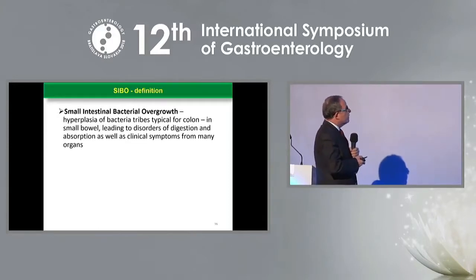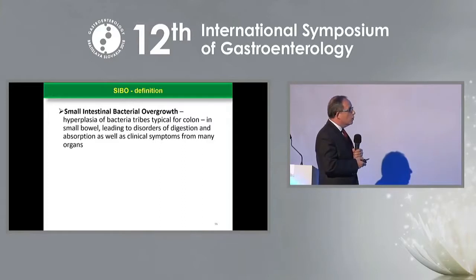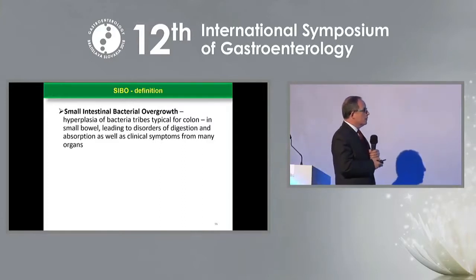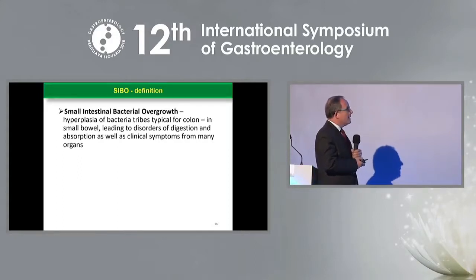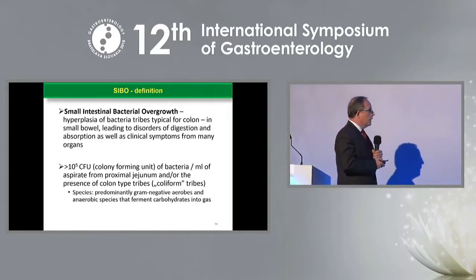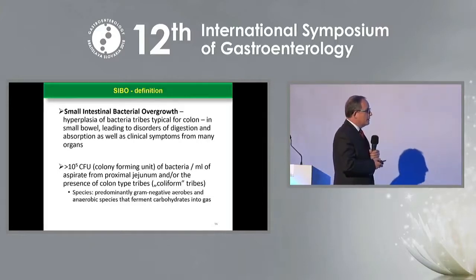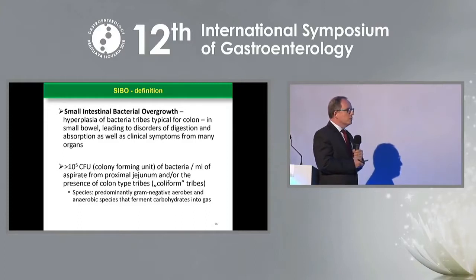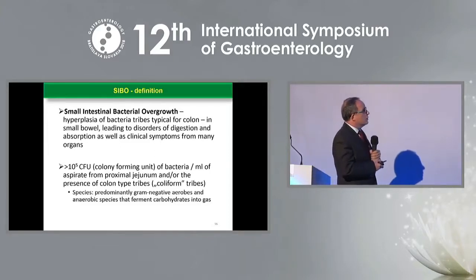Definition: What is SIBO? Small intestinal bacterial overgrowth is hyperplasia of bacteria types typical for the colon in the small bowel, leading to disorders of digestion and absorption as well as clinical symptoms for many organs. More than 100,000 colony-forming units of bacteria per one milliliter of aspirate from the proximal jejunum, and the presence of colon-type strains, is necessary to diagnose SIBO.